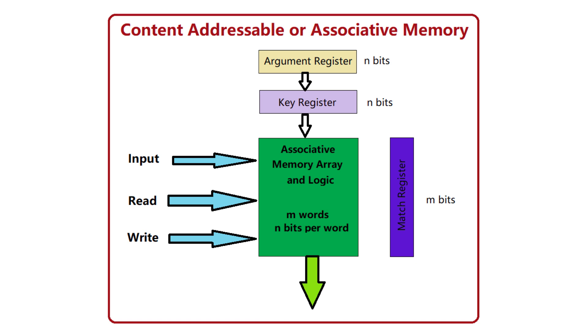But why is this helpful? Imagine searching a database, doing pattern recognition, or even complex AI tasks. Associative memory can drastically speed things up.